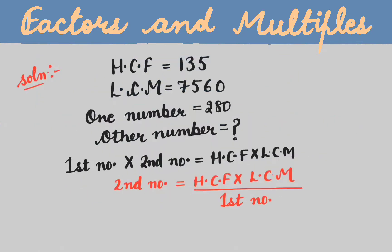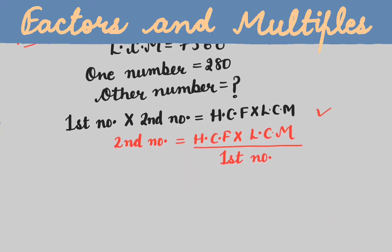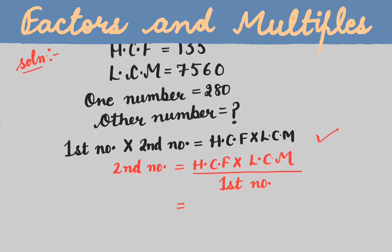We know that first number times second number equals HCF times LCM. From this formula, we write: second number equals HCF times LCM over first number. We will put the values here. HCF is 135.